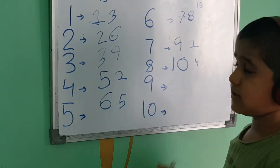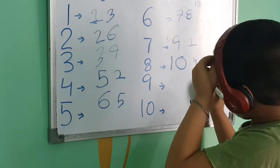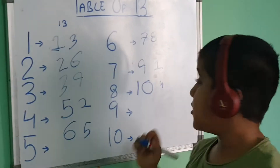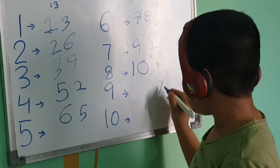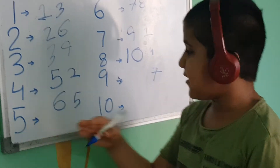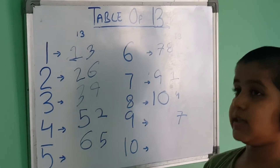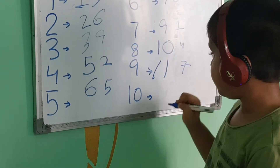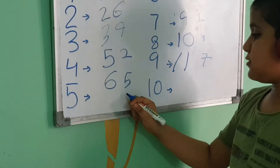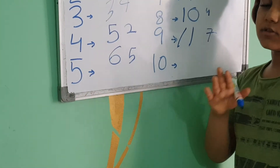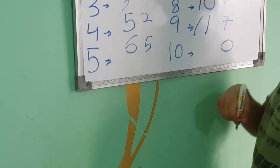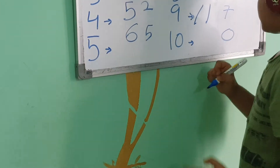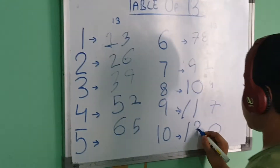3 nines is equal to 27. So we will write 7 here and take 3 carry. 9 plus 3 is equal to 12, so we write 117. Now 3 multiplied by 10 is 30. We will write 0 here and take 3 carry. And 10 plus 3 is equal to 13, so we write 130.